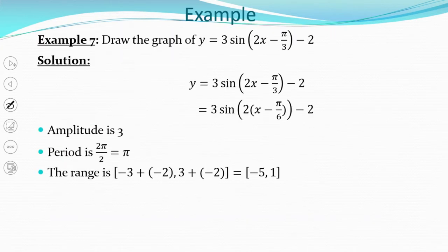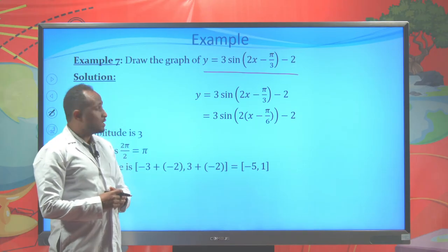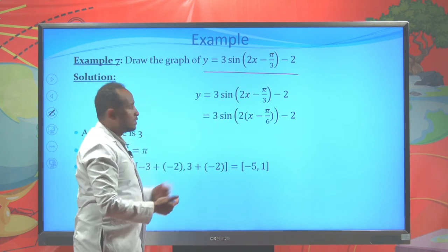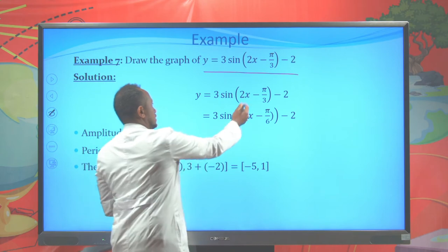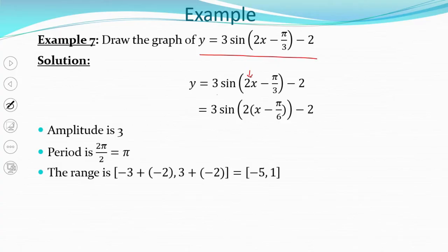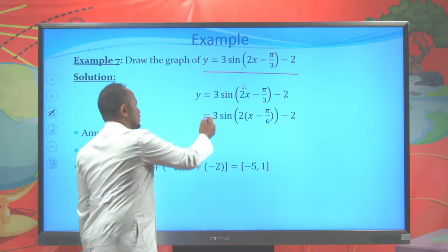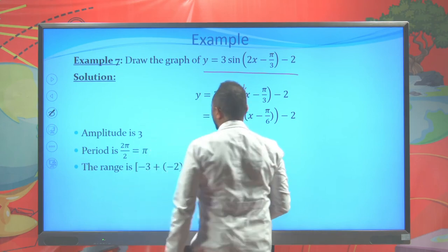Example: Draw the graph of f(x) = 3·sin(2x − π/3) − 2. First, rewrite: y = 3·sin(2(x − π/6)) − 2 by factoring out 2. From this form, the amplitude is 3. The period is 2π/k = 2π/2 = π.